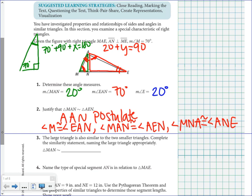The large triangle is also similar to the two smaller triangles, and we need to complete the similarity statement. We know triangle MAN is similar to triangle AEN, and they are all similar to the large triangle. Looking at angle M — that's the 70-degree angle — M is also the 70-degree angle on the big triangle. Then A on the small triangle is 20 degrees, and on the big triangle E is 20 degrees, leaving A to go last. The order matters because we're dealing with a similarity statement, just like a congruence statement.